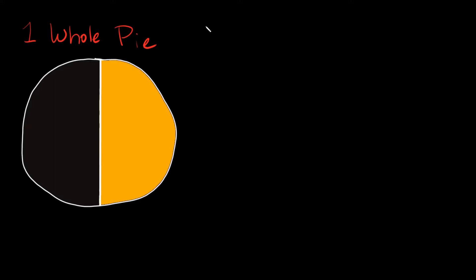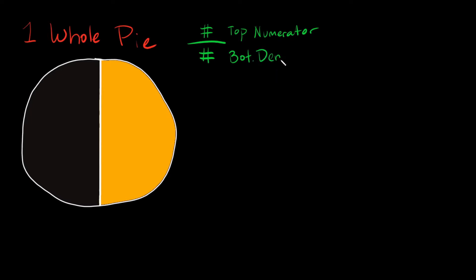A fraction is simply a number over another number. The top number is called the numerator, and the bottom number is called the denominator. Those are mouthfuls, so let's remember them.